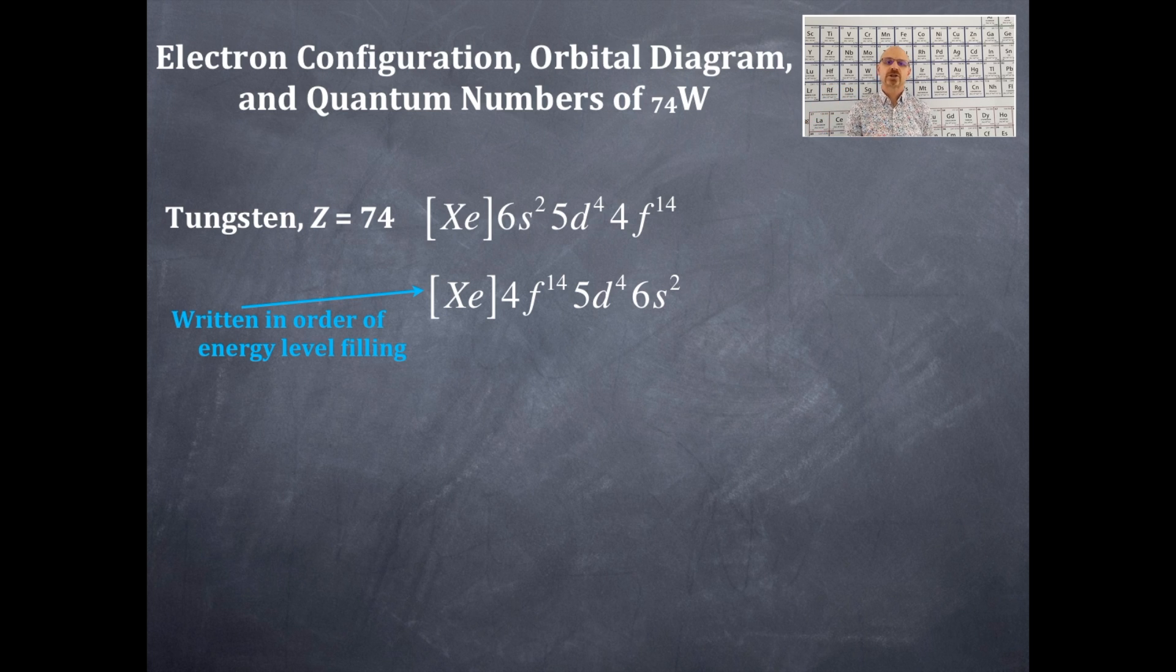This really helps you determine the number of valence electrons in tungsten. Tungsten is a transition element and because it's in the d-block, it has two valence electrons. You can see it when you write it in energy level filling.